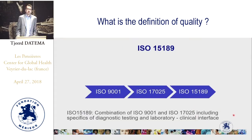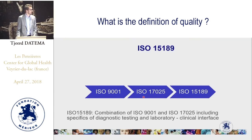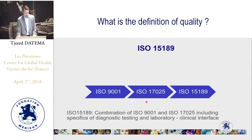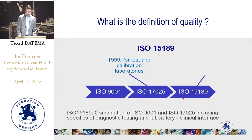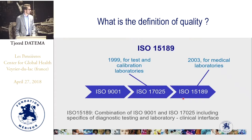Let's have a look at how ISO 15189 was created. First there was ISO 9001. Based on ISO 9001, the ISO 17025 was developed and published in 1999 as a standard for test and calibration laboratories. From ISO 17025, the ISO 15189 for medical laboratories was developed and first published in 2003. So ISO 15189 is based on both ISO 9001 and ISO 17025.